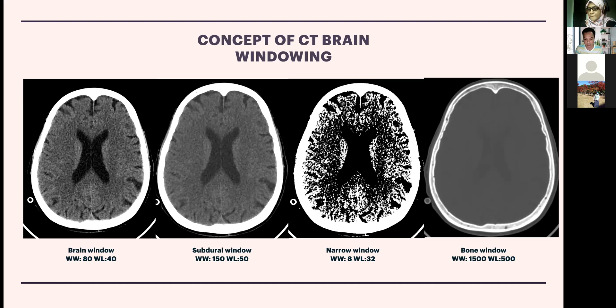The subdural window or narrow window for stroke is not provided on printed films. However, on a hospital computer system the clinician can manipulate the image and change the window with a single click. For radiologists, memorizing all the window settings is compulsory. The brain window lets you look at brain structure; the subdural window is also good for stroke because sometimes a bleed can be accentuated. The narrow or stroke window is one I personally like to use — I'll show cases using it later.